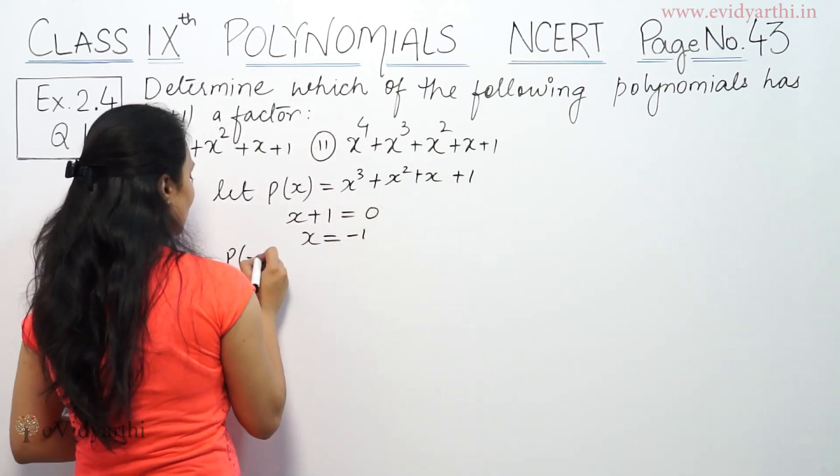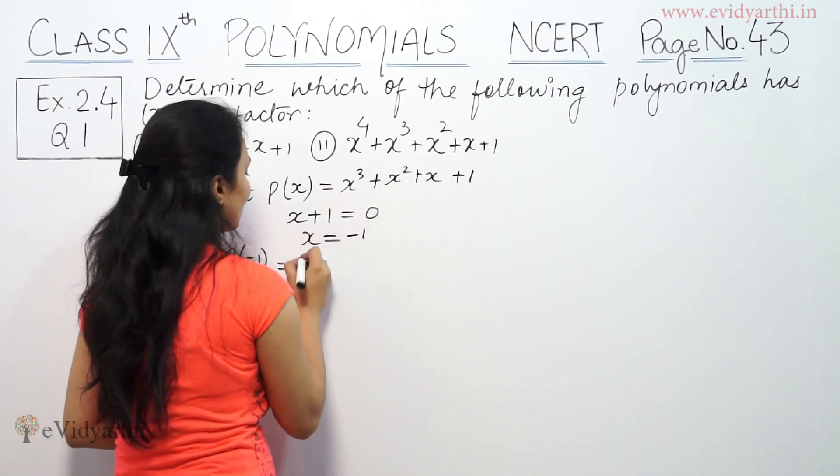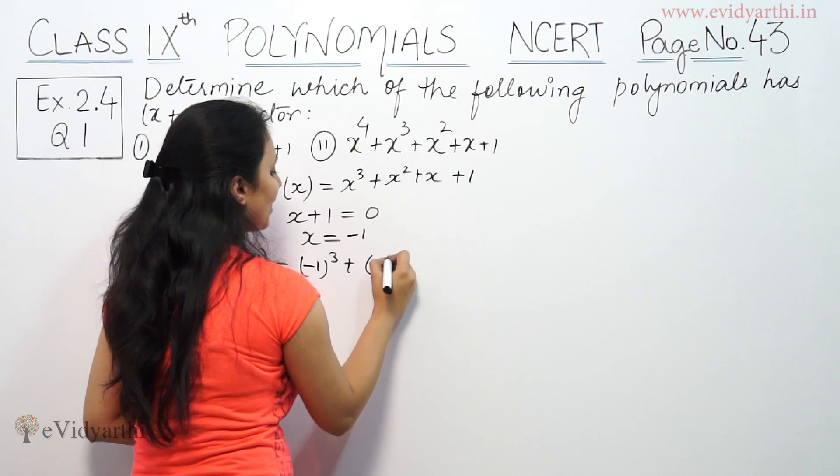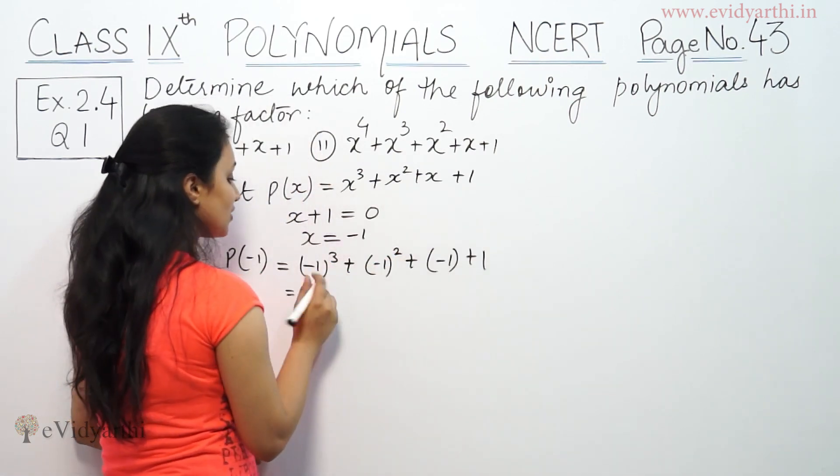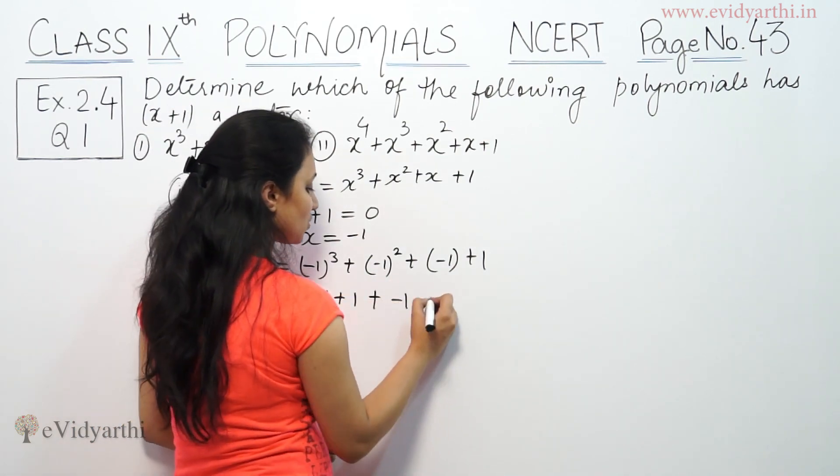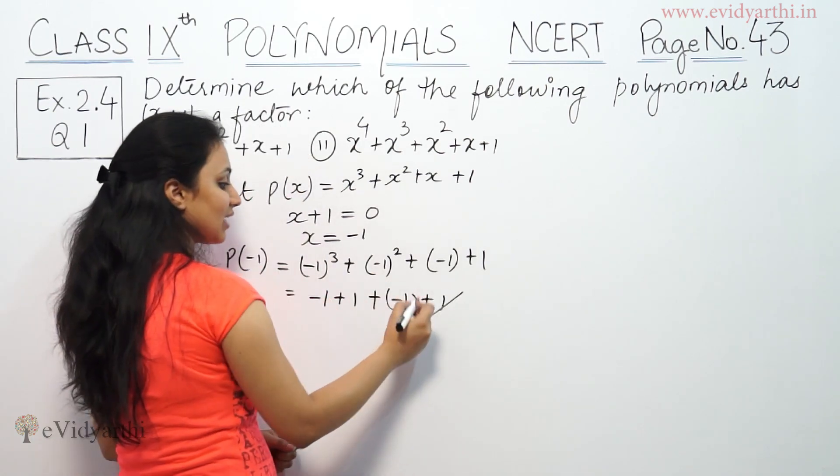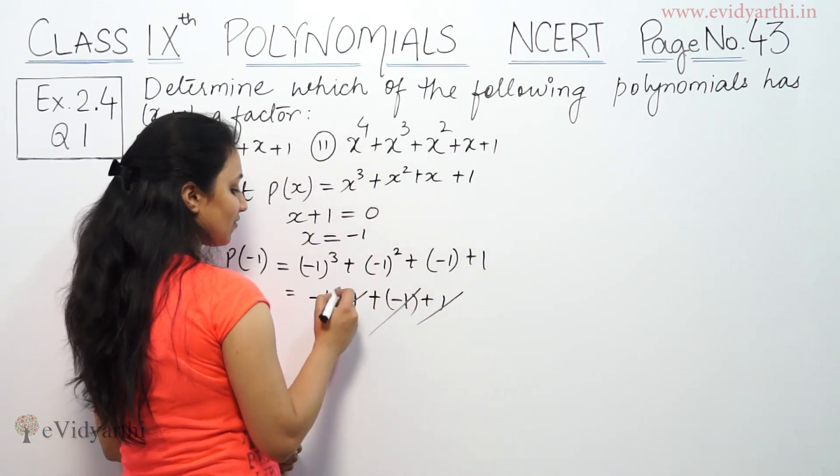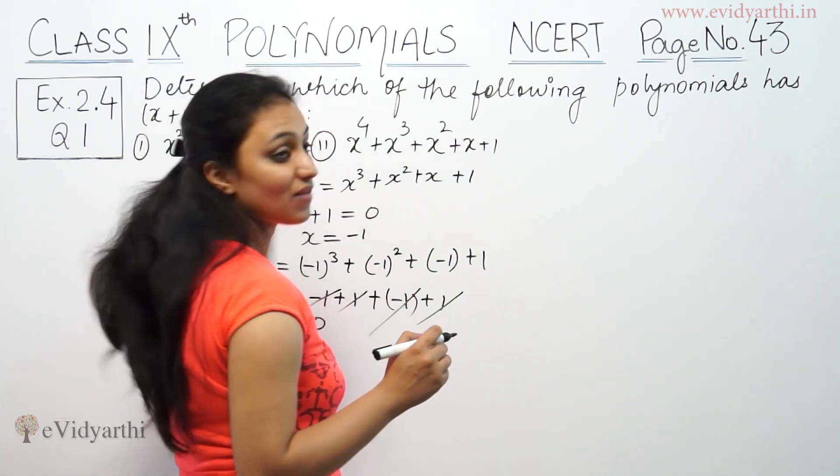Substituting x equals minus 1 wherever x appears: minus 1 cubed plus minus 1 squared plus minus 1 plus 1. So minus 1 cubed is minus 1, minus 1 squared is plus 1, minus 1 plus 1.